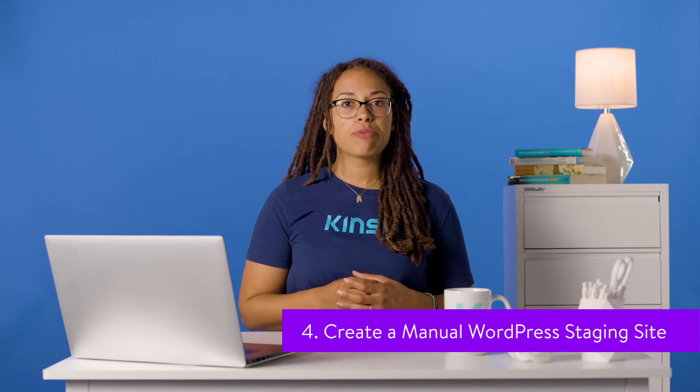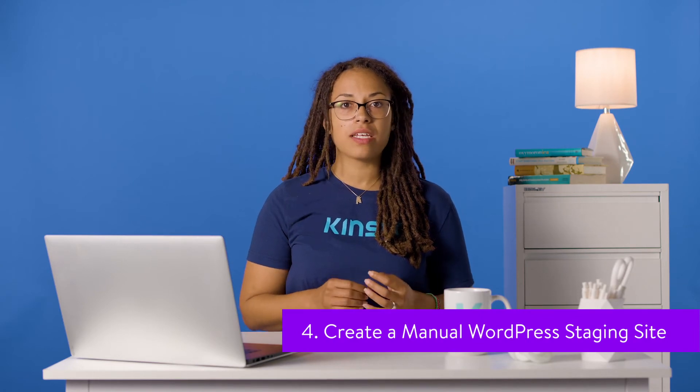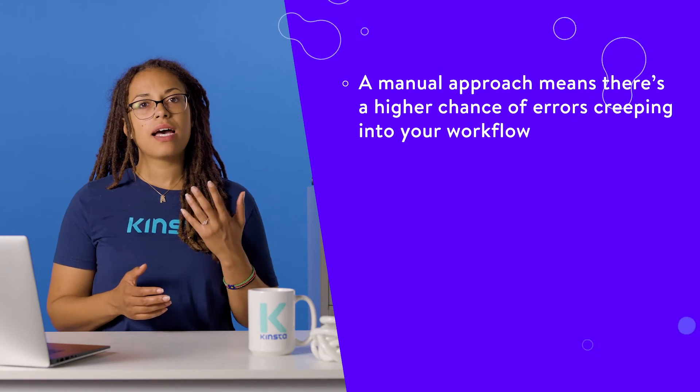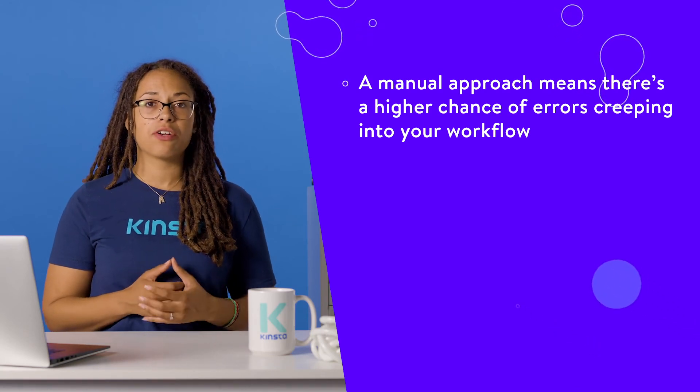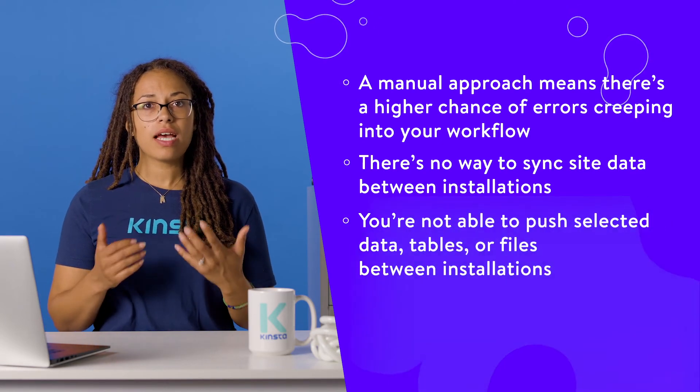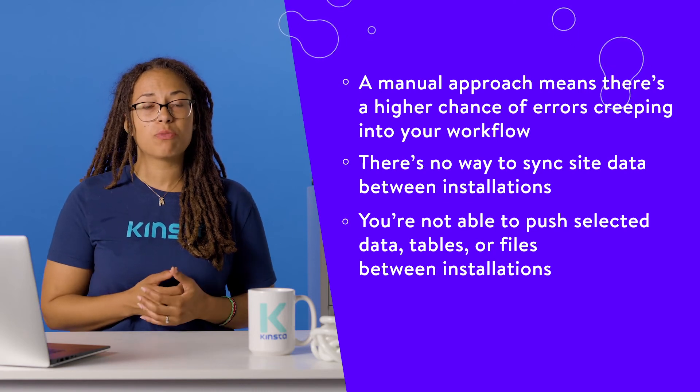Our final method for setting up a WordPress staging site is the toughest and not as functional. We're hard pressed to recommend it in all but the most extreme and niche use cases. Creating a manual WordPress staging site is as it sounds — you'll build all of the components you need and deploy your site without automation for the most part. There are a few severe drawbacks with this approach. A manual approach means there's a higher chance of errors creeping into your workflow. There's no way to sync site data between installations, and you're not able to push selected data, tables, or files between installations. In other words, you're creating a manual version of a plugin such as Duplicator.